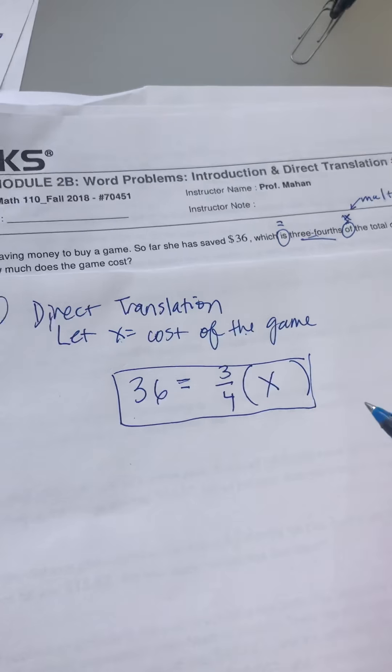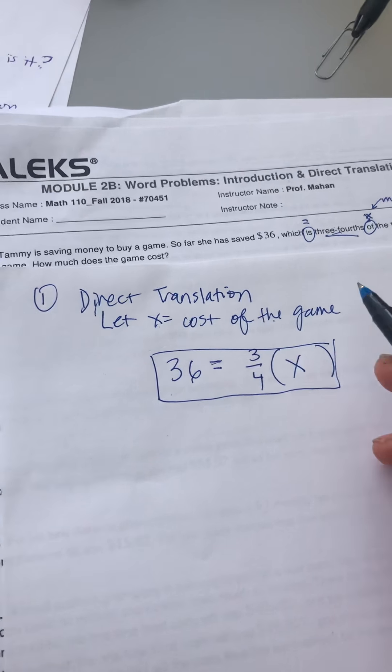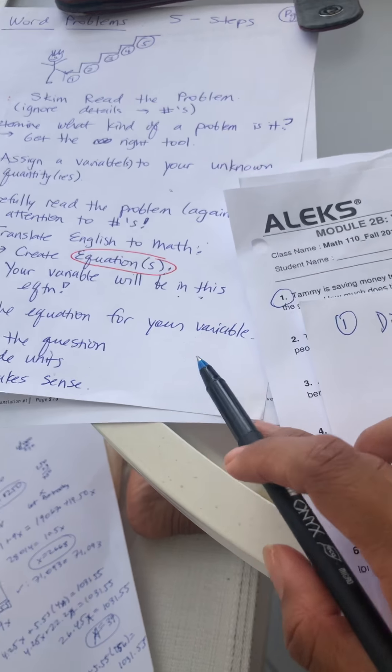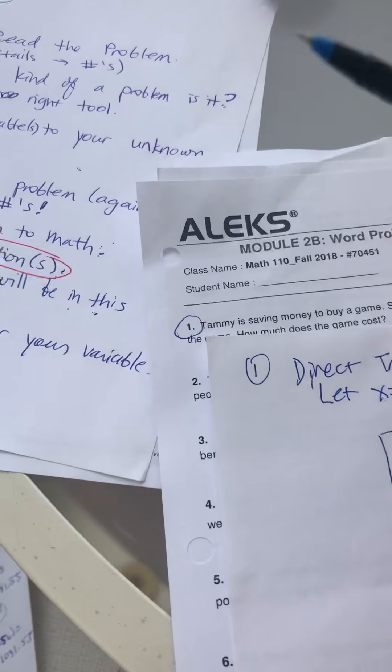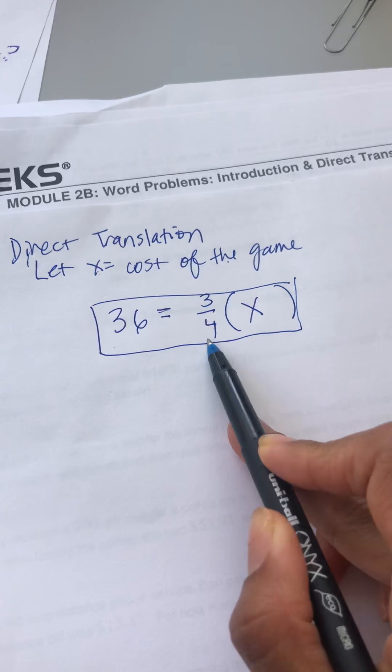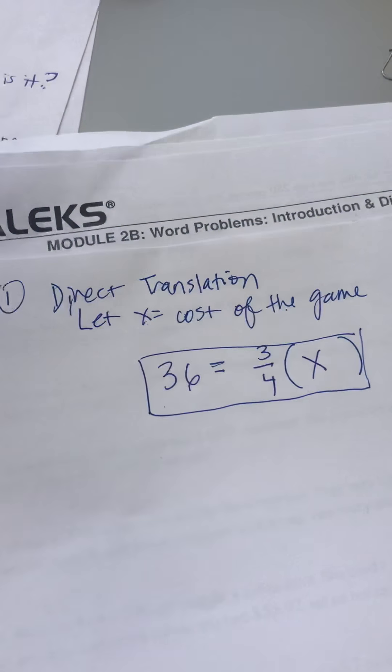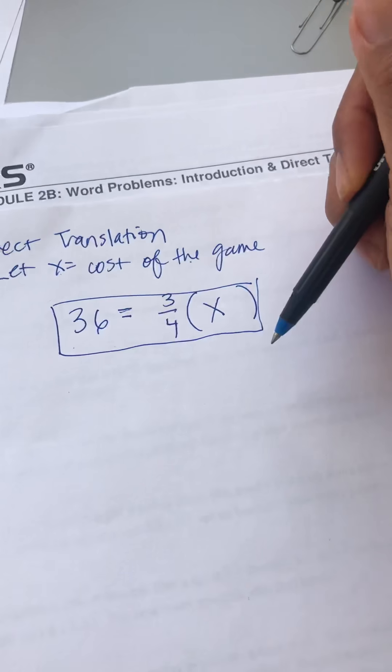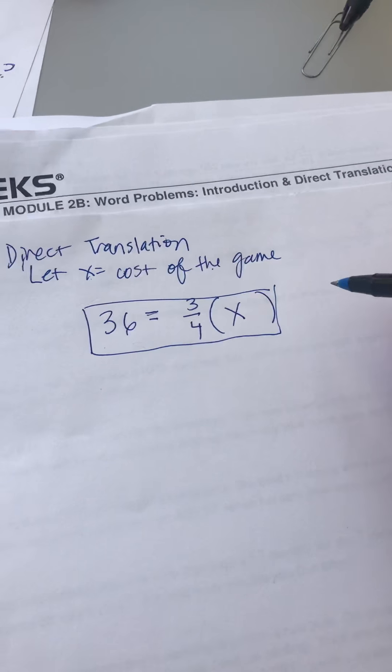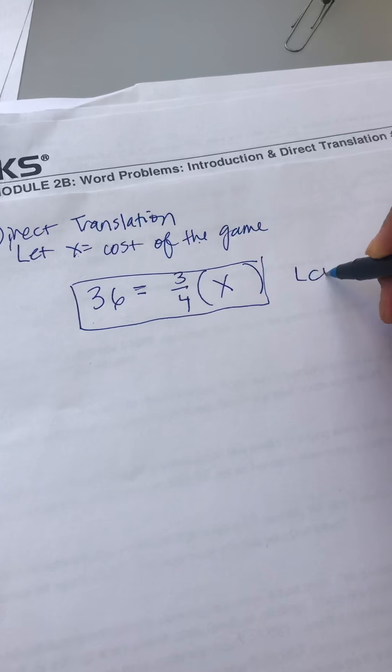Okay, step four now is to solve the equation for your variable. I'm going to ignore my word problem and I'll solve this. We have fractions in this equation, so if you remember, what do we do when we have fractions? We get rid of it by multiplying by the lowest common denominator. The lowest common denominator is four.